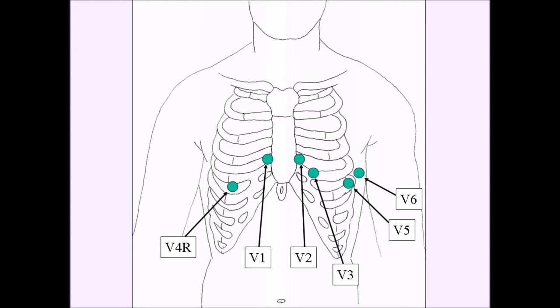You would take V4 and move it to the fifth intercostal space on the patient's right side, sort of level with the xiphoid process and in line with the nipple line. If you do this, it's like placing a camera looking directly at the right ventricle.